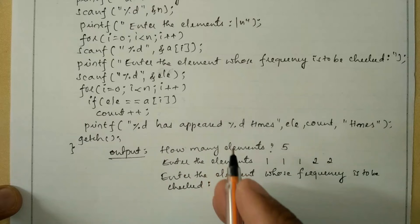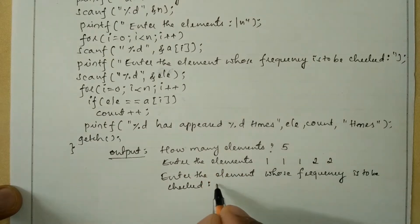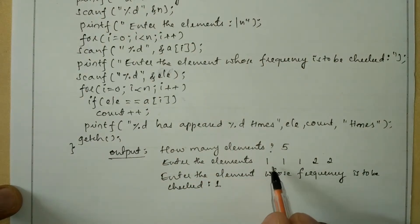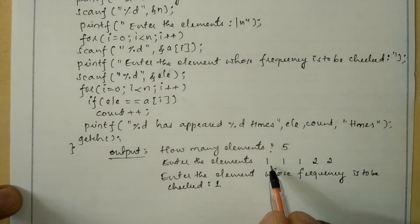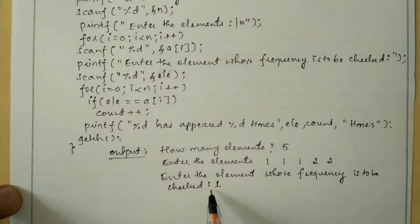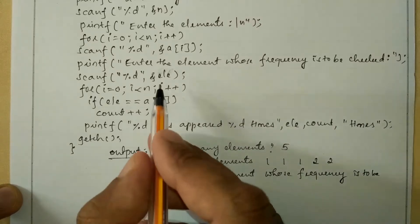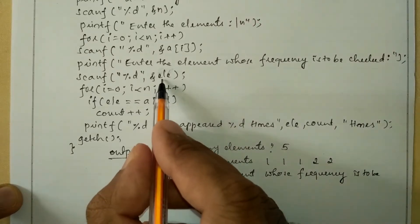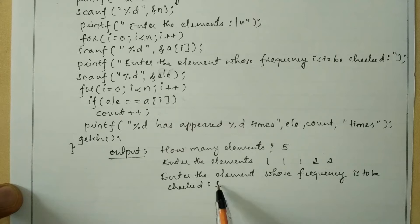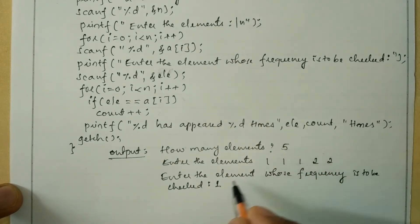Now I am going to enter 1. So clearly you can see 1 has appeared 1, 2, 3 times — so it should print "1 has appeared 3 times". Here element is holding value 1, and n is 5.